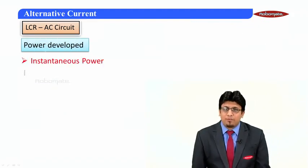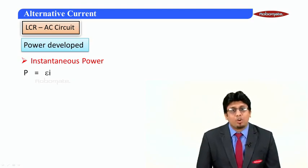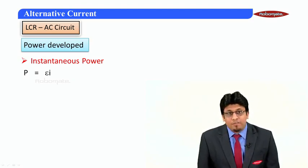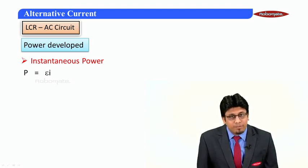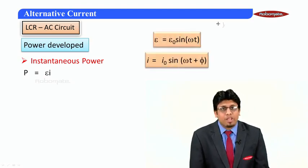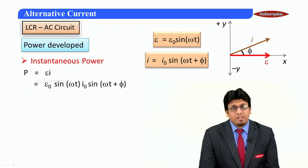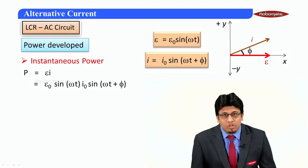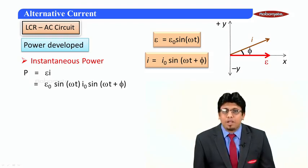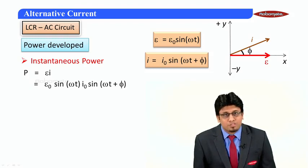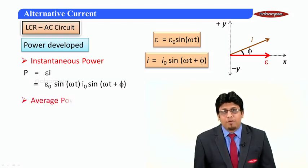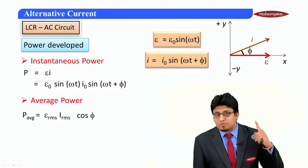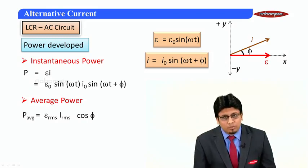Now let us try to find out the power developed across such a circuit. We know instantaneous power is nothing but ε × I. Putting down the value that we have here, we will get that it is equal to ε₀I₀ sin(ωt) × sin(ωt + φ), where φ can be found out using this particular diagram or the phasor methods that we know.